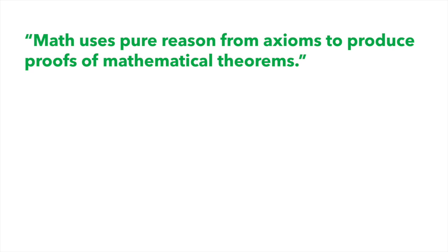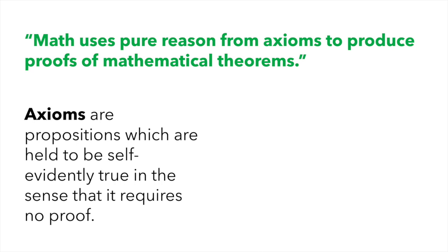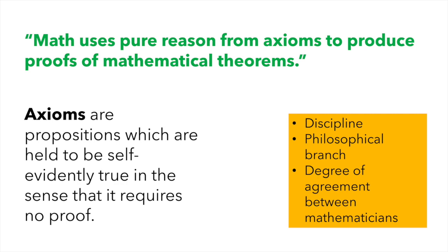So what are some of the methodologies used in mathematics? Math uses pure reason from axioms to produce proofs of mathematical theorems. There are those words again. Let's just do a vocab check for a second. Axioms are propositions which are held to be self-evidently true in the sense that it requires no proof. But remember, what counts as an axiom in mathematics depends on a number of factors such as the discipline, the philosophical branch, and even the degree of agreement between mathematicians.